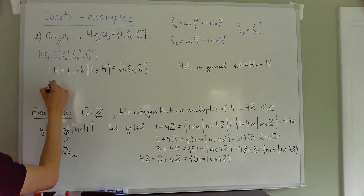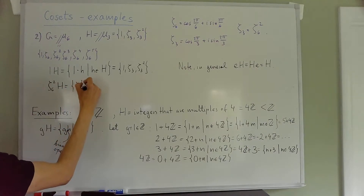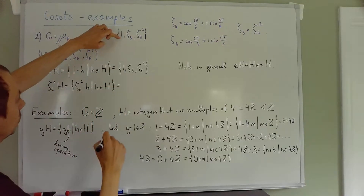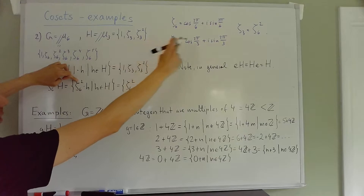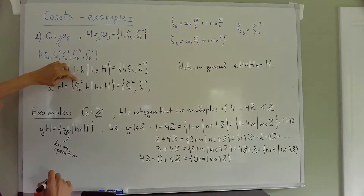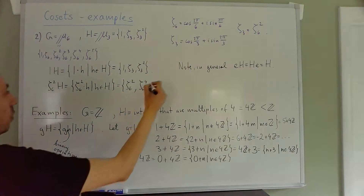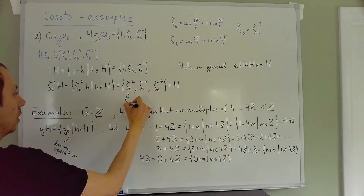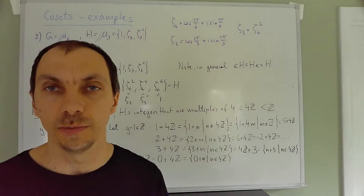Let's try ζ₆². The coset ζ₆²·H gives: ζ₆² times 1 = ζ₆², ζ₆² times ζ₃ = ζ₆² times ζ₆² = ζ₆⁴, and ζ₆² times ζ₃² = ζ₆² times ζ₆⁴ = ζ₆⁶ = 1. So this coset is {ζ₆², ζ₆⁴, 1}, which is just H again. Taking ζ₆² as a representative didn't produce any new coset.